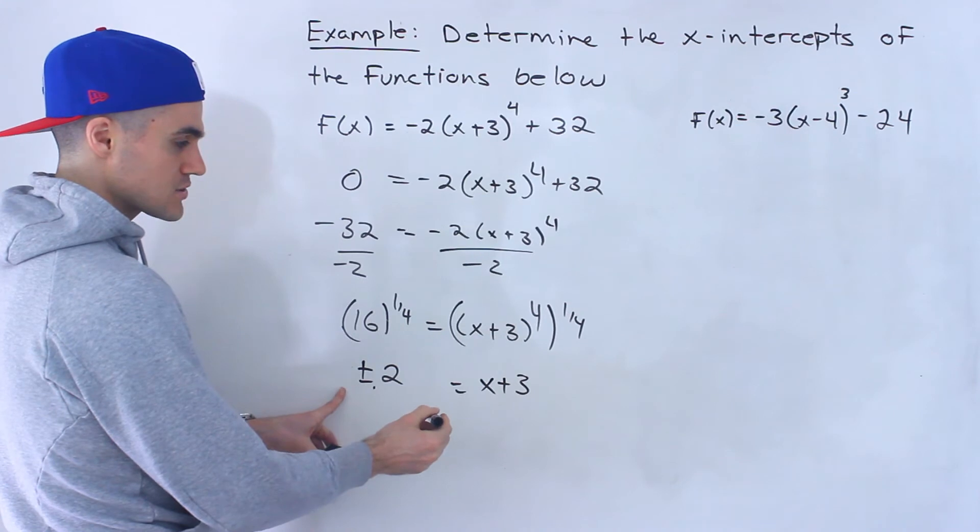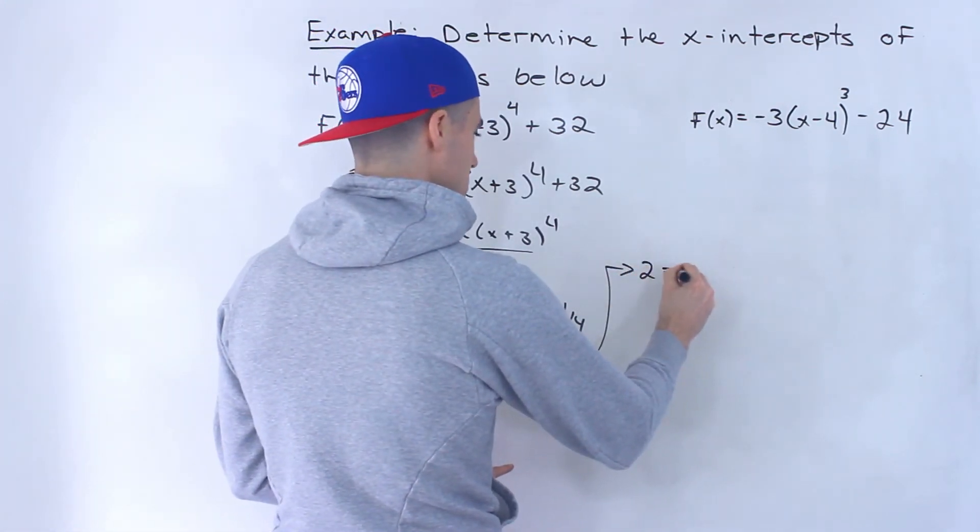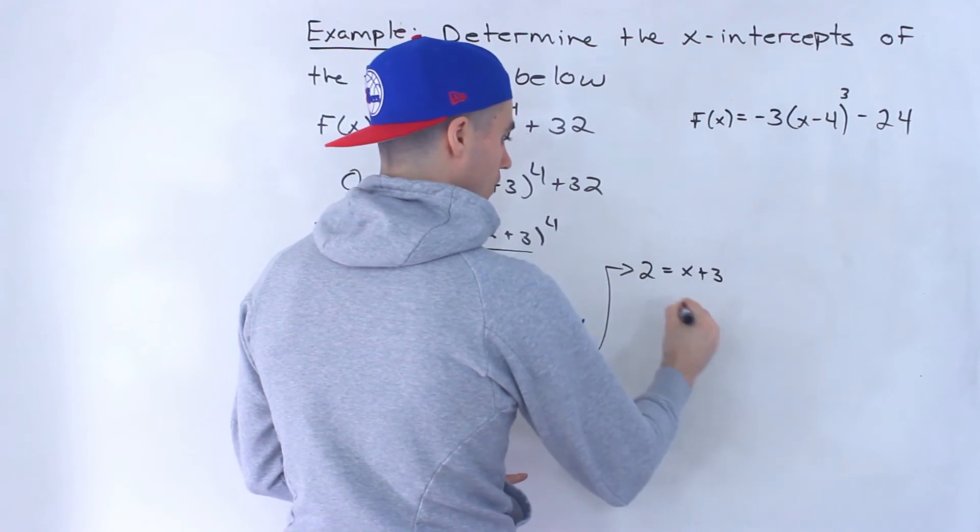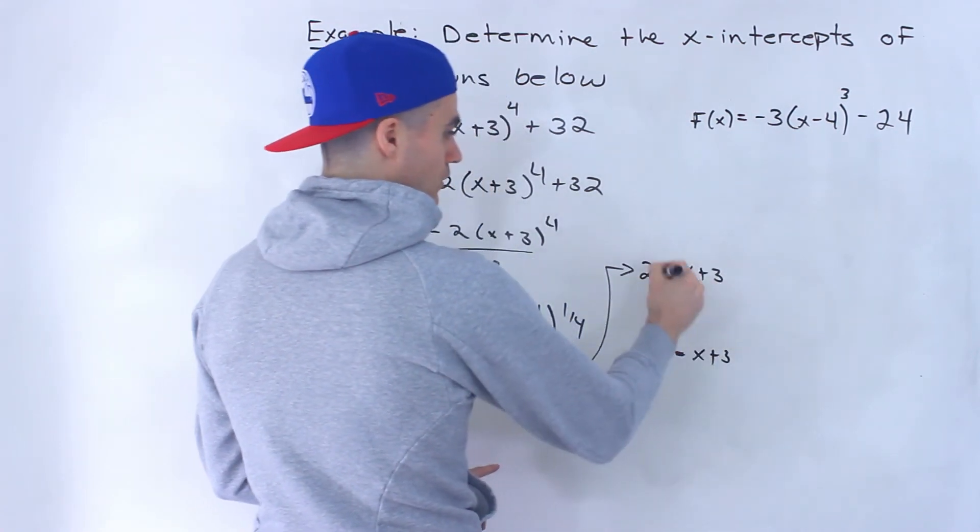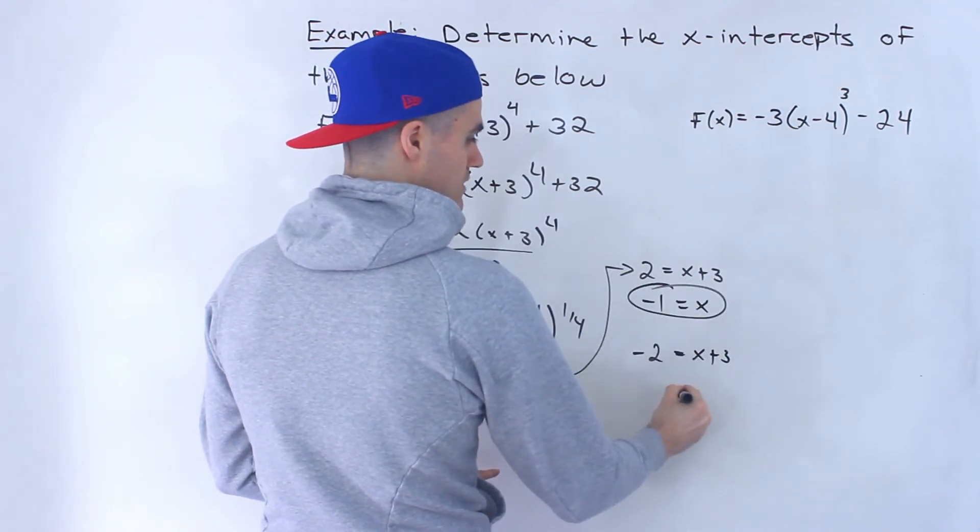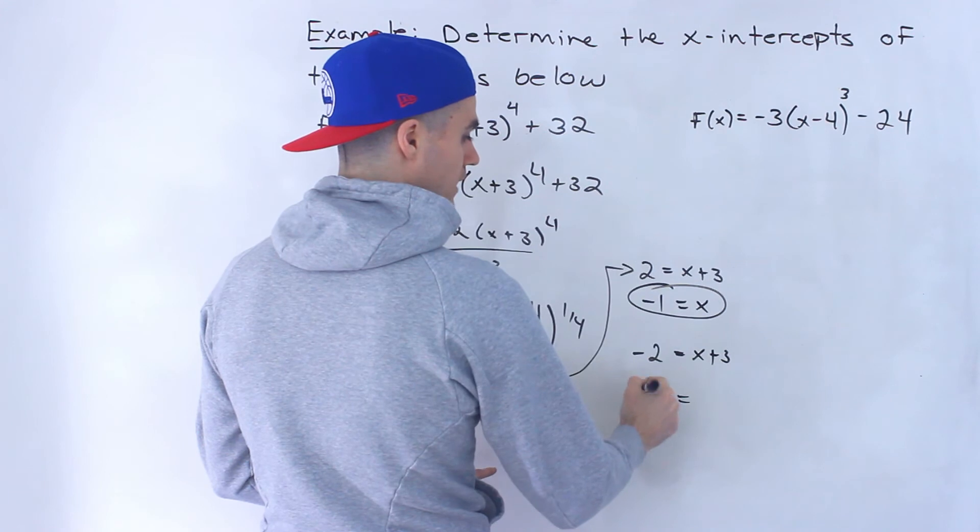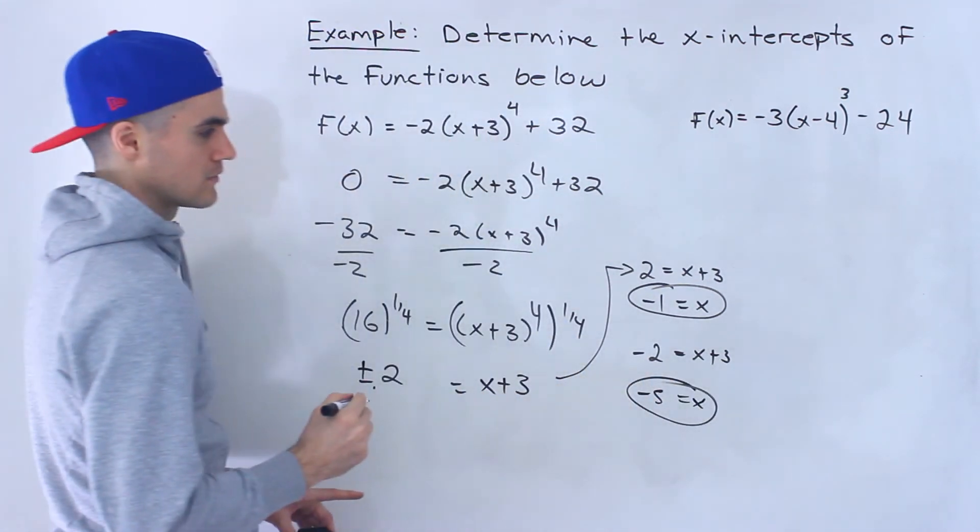And so in this case, there's going to be two cases. 2 = x+3 or -2 = x+3. So bring the 3 over, x would be -1. That's one of the x-intercepts. Bring the 3 over, -2 minus 3 gives us -5. That would be the other x-intercept.